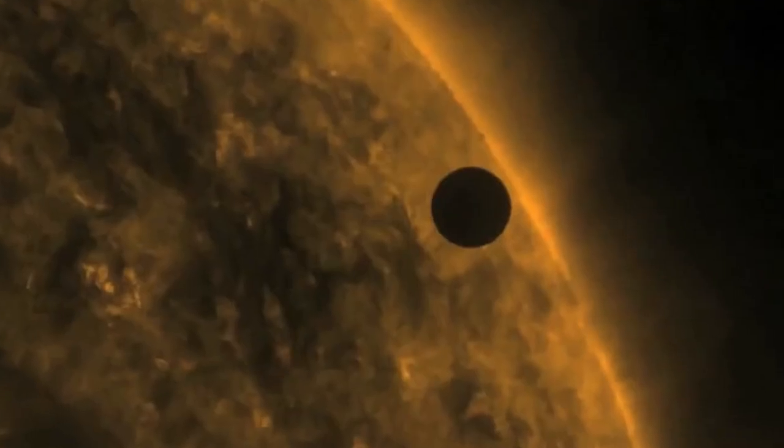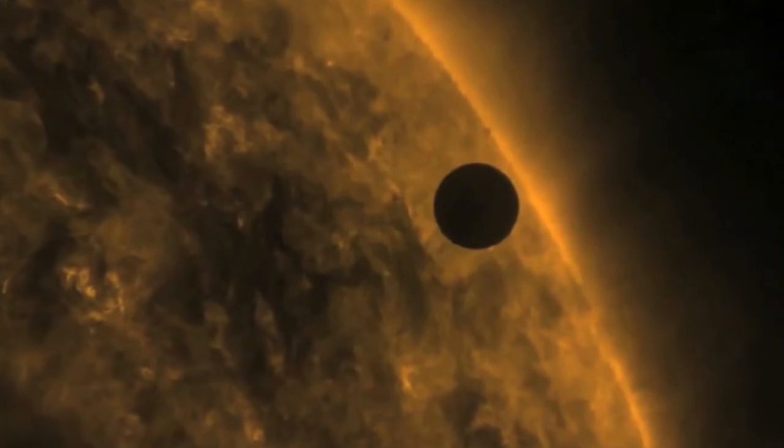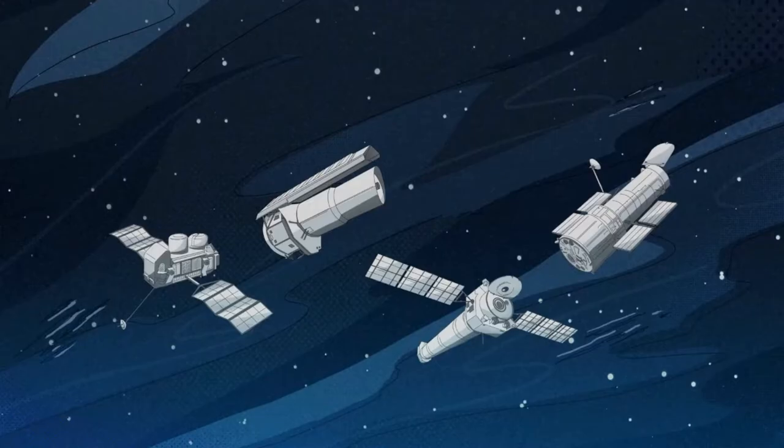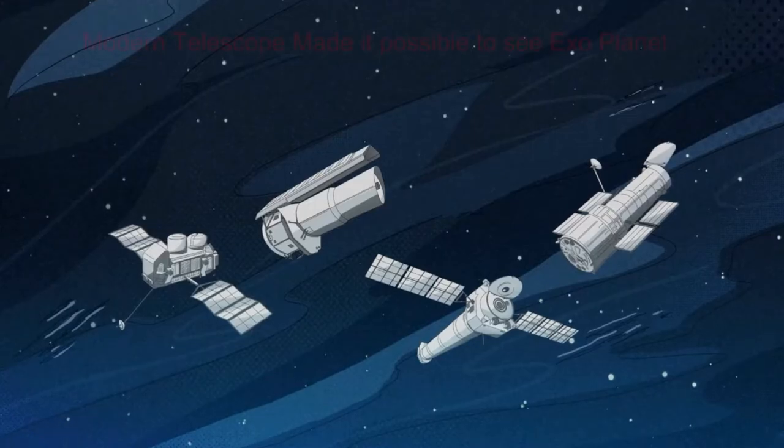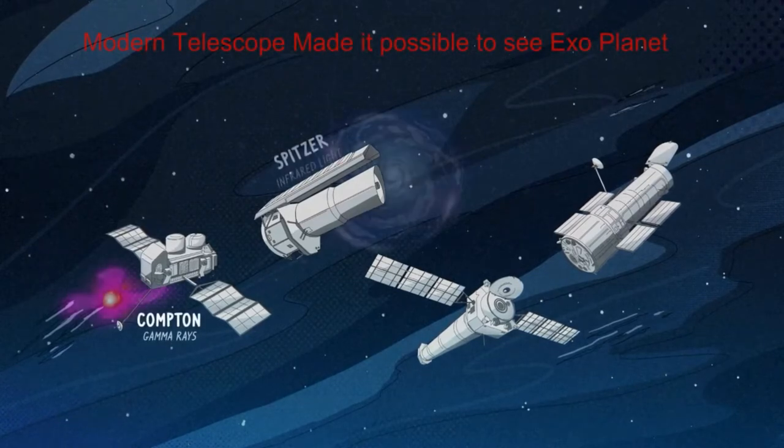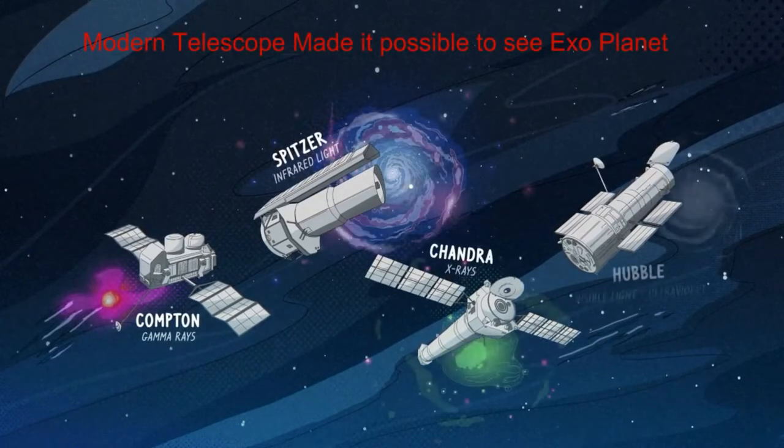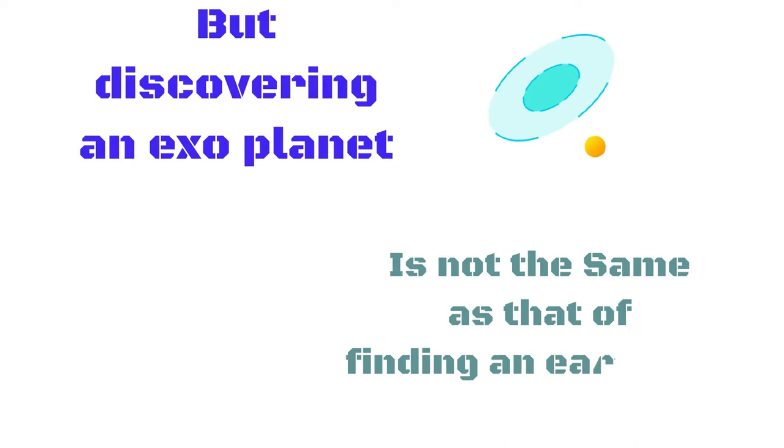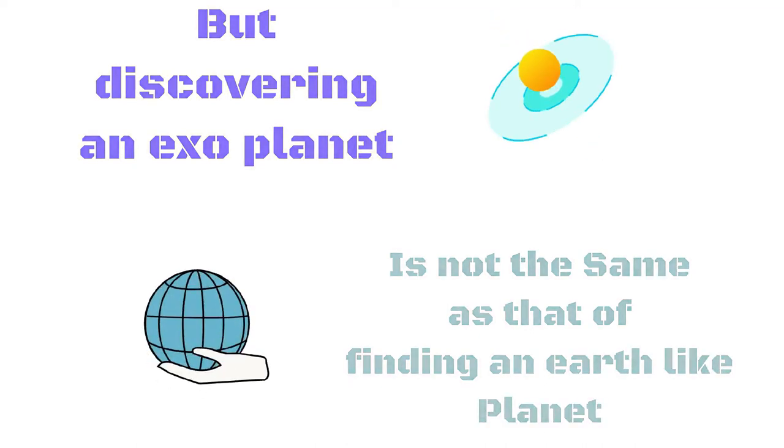In all of these three methods, we infer the presence of exoplanets, not see them directly. But modern telescopes have become so powerful that we are able to see them and not simply infer their presence. But discovering an exoplanet is not the same as that of finding an Earth-like planet. There are a few other crucial steps to get there.